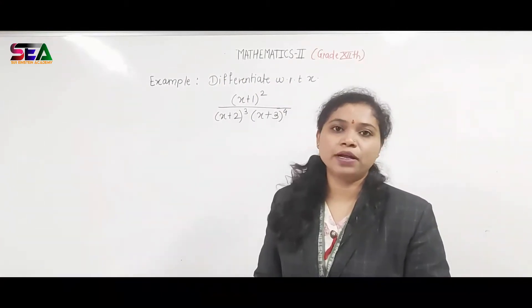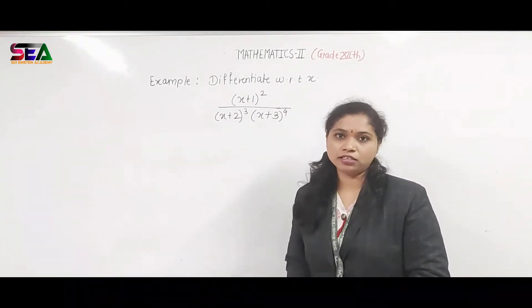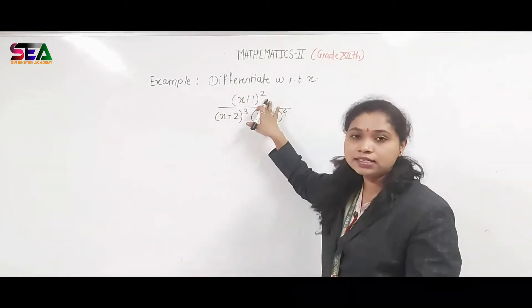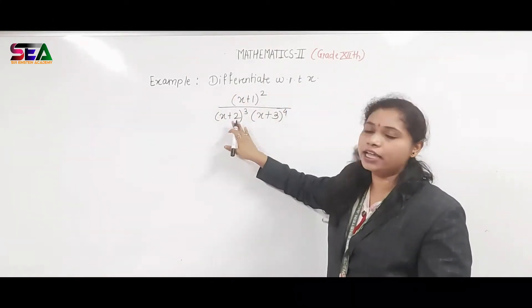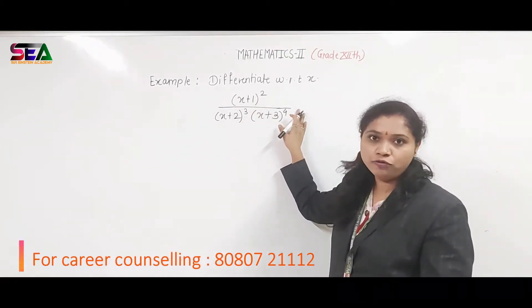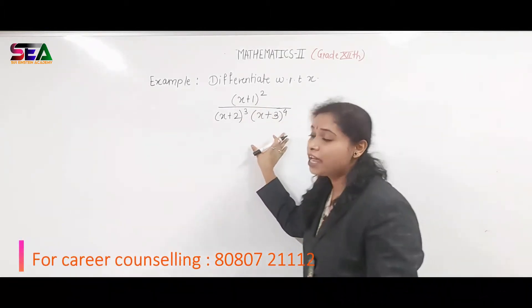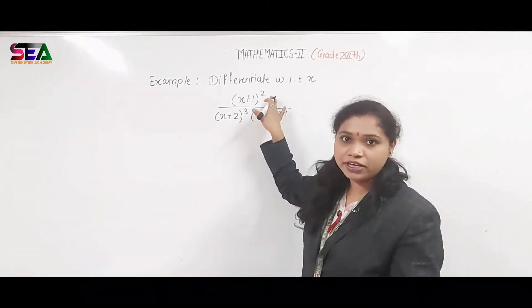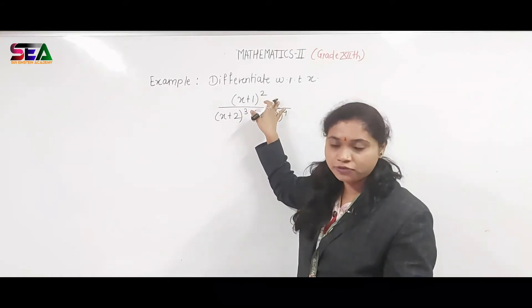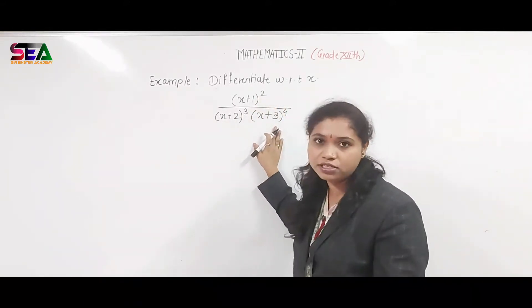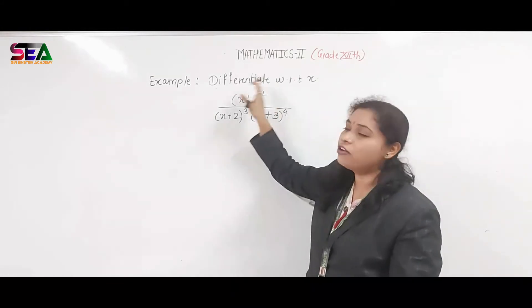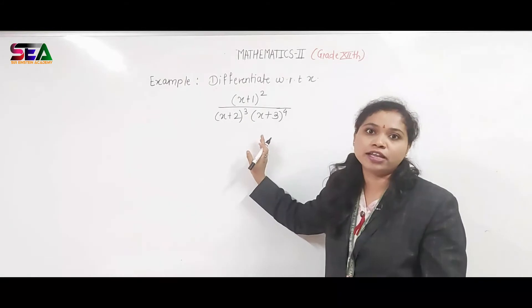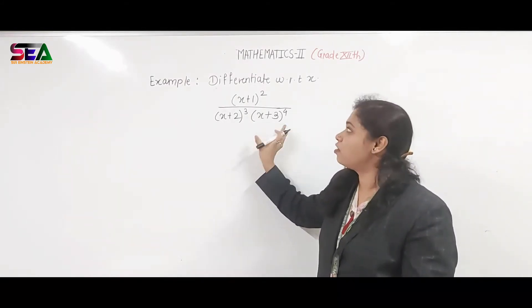Now let's solve one example based on logarithmic differentiation. The given example is: differentiate with respect to x the function (x+1)² divided by (x+2)³ into (x+3)⁴. First, we have to judge whether this is a logarithmic differentiation problem. Observing 3 functions — x+1, x+2, and x+3 — this is a quotient of 3 functions, so by condition 2 we can use logarithmic differentiation.